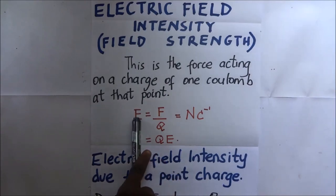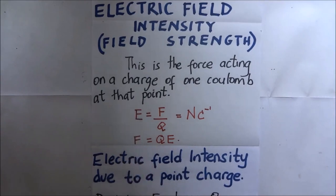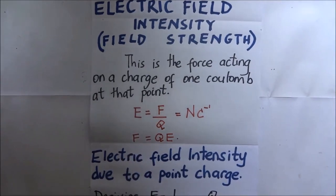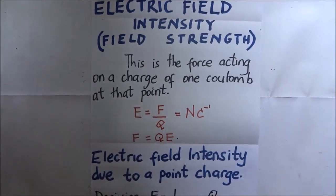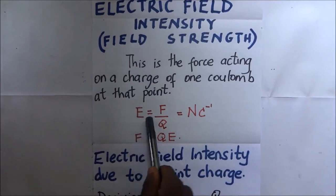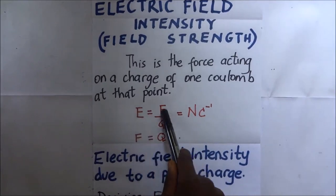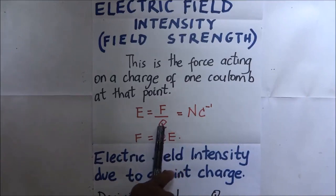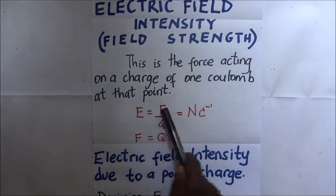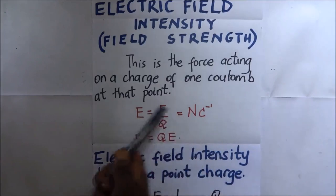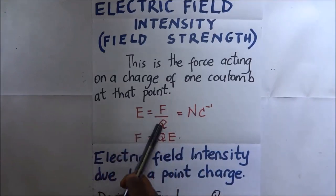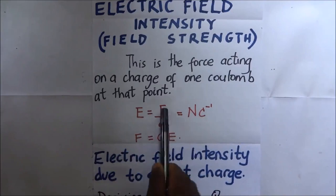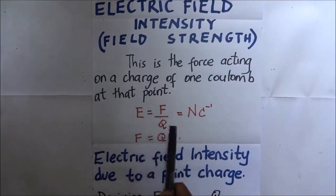E will stand for electric field intensity. Electric field intensity, labeled E, is going to be equal to the force of that field divided by the charge. The SI unit for electric field intensity is newtons — coming from force — divided by coulombs for the charge q. So it is newtons per coulomb.